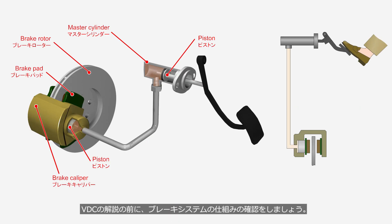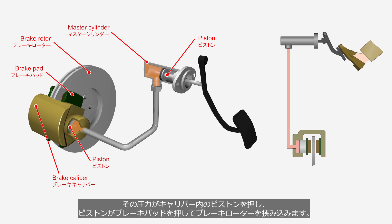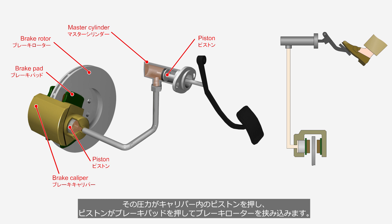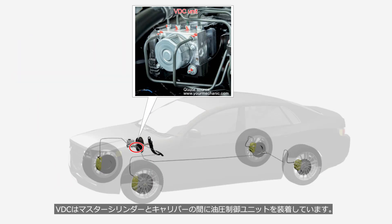Before explaining VDC, let's review the mechanism of the brake system. When the brake pedal is depressed, the piston inside the master cylinder creates brake fluid pressure. This brake fluid pressure pushes the piston in the brake caliper, and the piston presses the brake pads and clamps onto the brake rotor. The VDC system is equipped with a hydraulic control unit positioned between the master cylinder and the brake calipers.